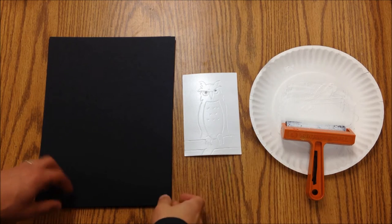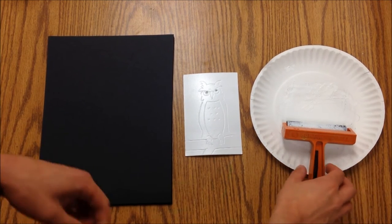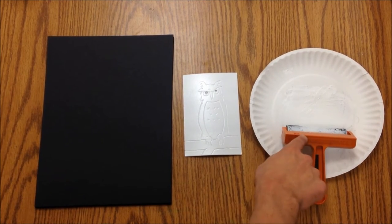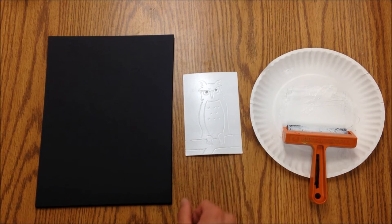Alright, so we're going to make a print of a nocturnal animal. Here we have some ink, a brayer, our printing plate, and our paper. The great thing about printing is that you can make multiple copies of the same image over and over again.